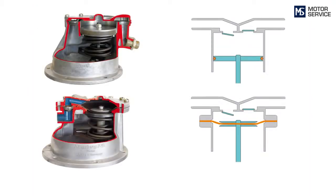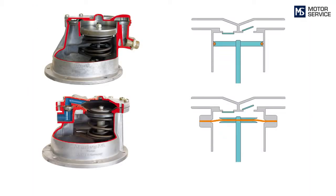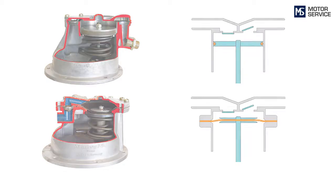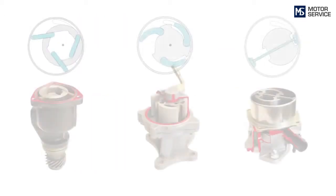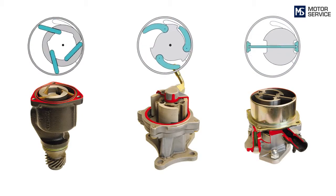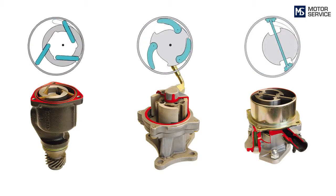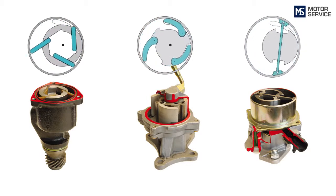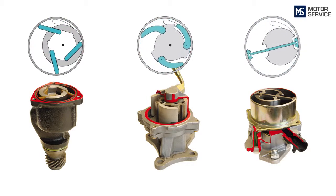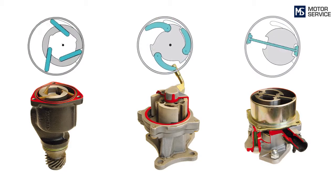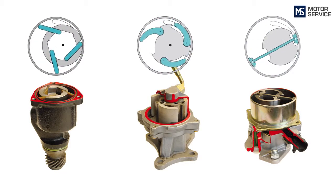Vacuum pumps that move a piston or diaphragm back and forth have long proven their worth in the field. A more recent development is vane vacuum pumps with rotary drive. Here, a rotor with one or more vanes forms compartments, the size of which varies during the work cycle.